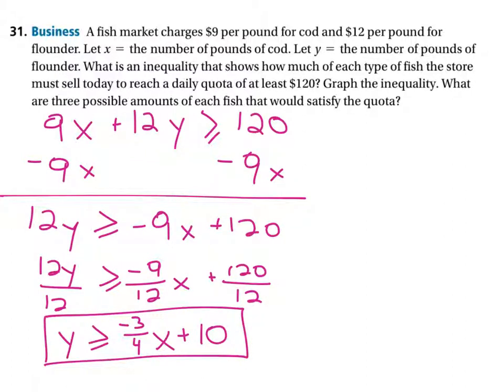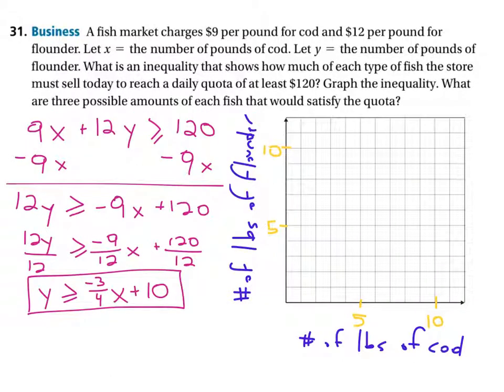This is the line that we're going to need to graph. So I'm going to, let me see if I can shrink this down and insert a graph here. Okay, so here we are back again. We've got Y is greater than or equal to negative 3/4ths X plus 10.